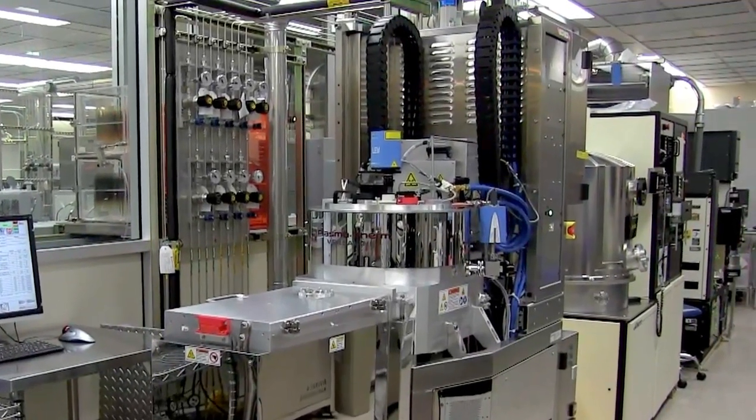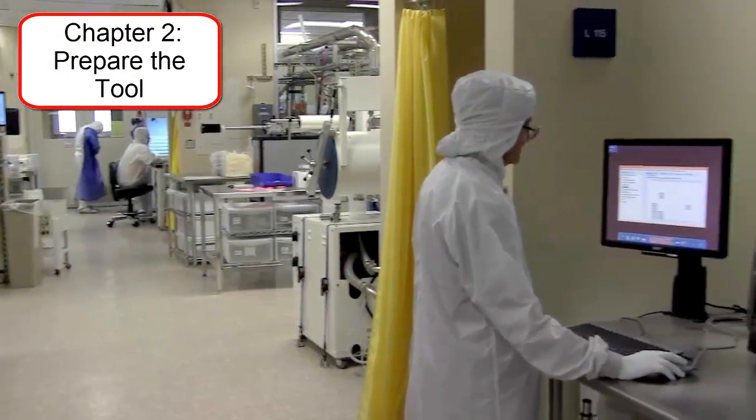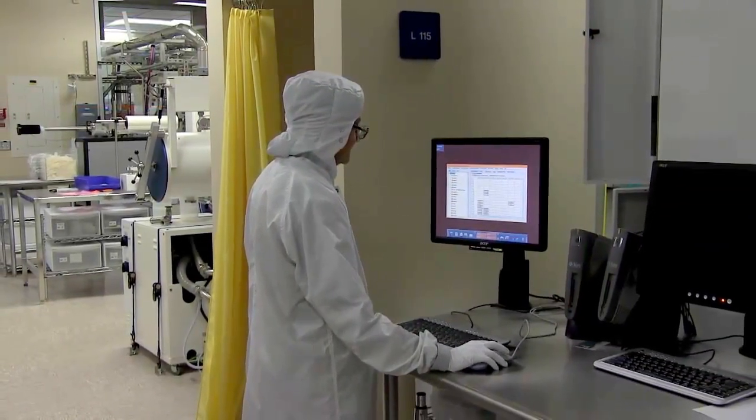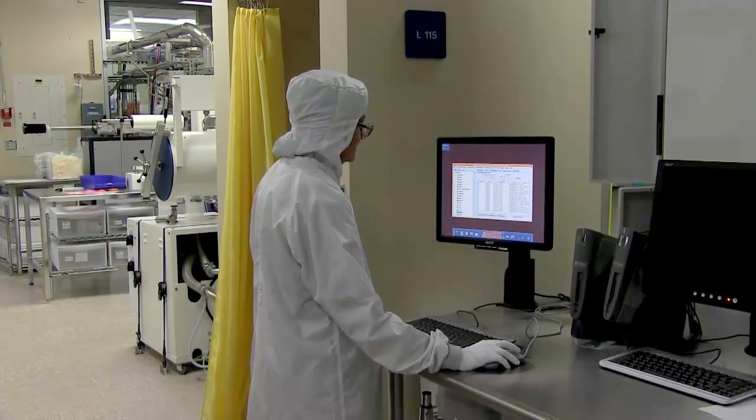The following are the operating instructions for the Plasmatherm Metal Etcher. First check in Badger for tool status and wafer configuration and make sure it is available for processing and set for the appropriate wafer size.